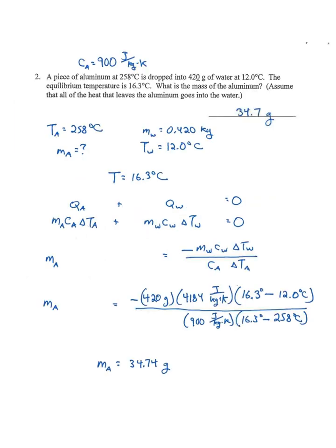Number two, a piece of aluminum is dropped in water. The equilibrium temperature is given. What is the mass of the aluminum? Here's the given information: temperature of aluminum is 258 degrees Celsius, mass of the aluminum is the question, mass of water is given, temperature of the water is given. Because this equation is based on changes in temperature, it's okay to leave it in Celsius.